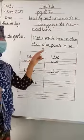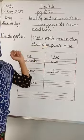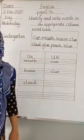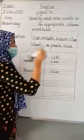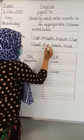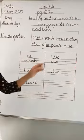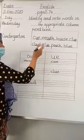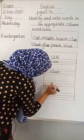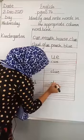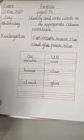Now come to the next word. The next word is G-L-U-E, 'glue'. Look at the word 'glue'. The word 'glue' has U sound. So where do we write the word 'glue'? We write the word 'glue' in the U sound column. G-L-U-E.